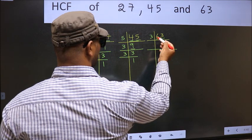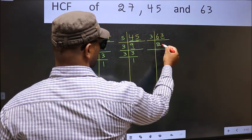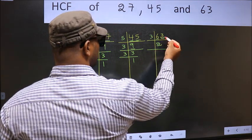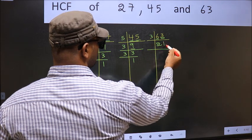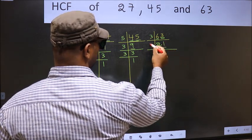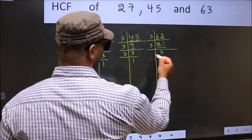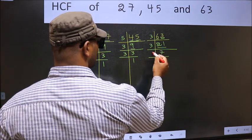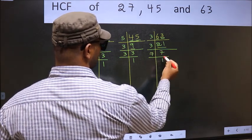First number 6. When do we get 6 in the 3 table? 3 times 2, 6. The other number 3. When do we get 3 in the 3 table? 3 times 1, 3. Now 21 is 3 times 7, 21. Now 7 is a prime number so 7 times 1, 7.